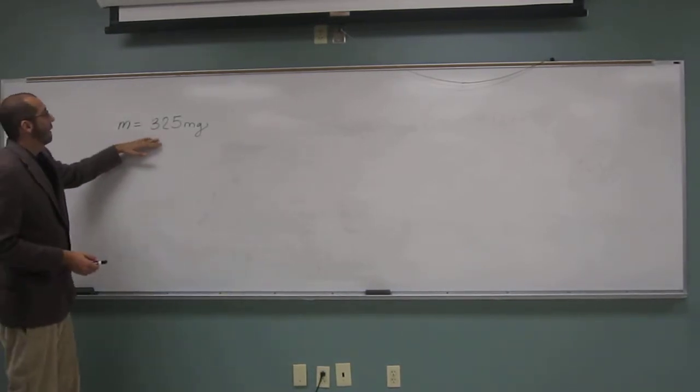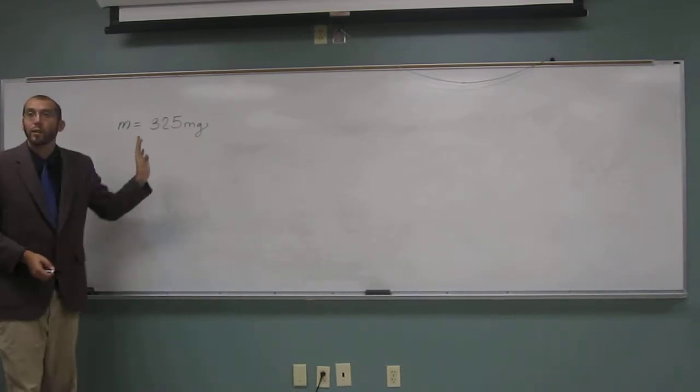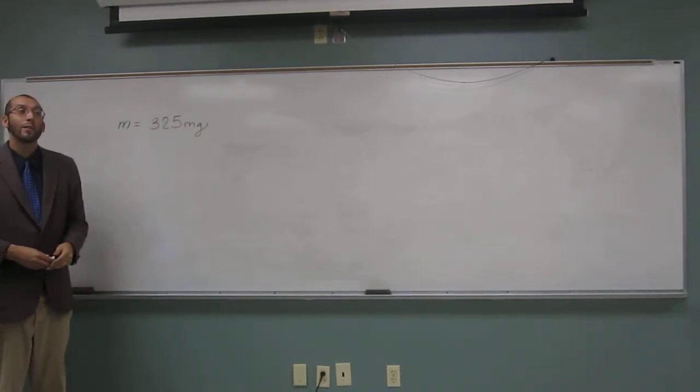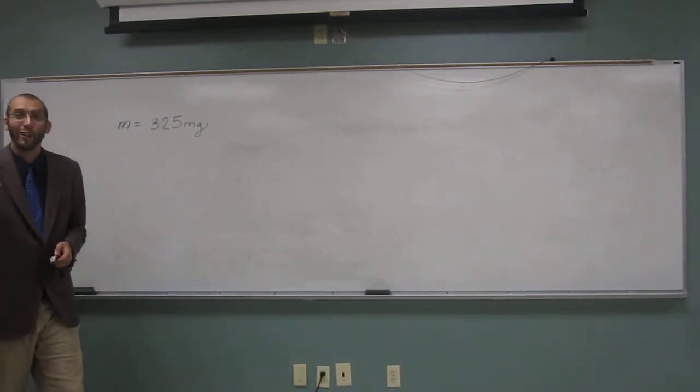So I've taken the liberty of writing down the number that was given to us in the problem, 325 milligrams. But it wants us to convert it to grams. Do you guys know the conversion factor between grams and milligrams?